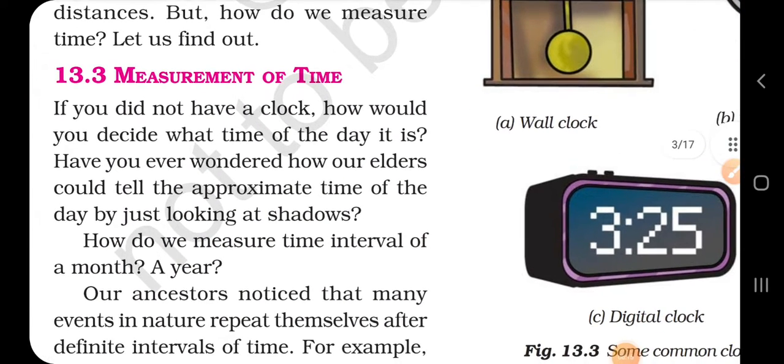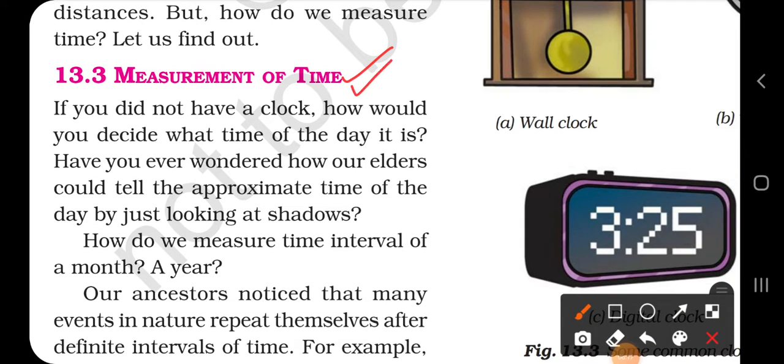Next comes measurement of time. How do you measure time? If you did not have a clock, how would you decide the time? In olden days people used to measure by paher - first paher, second paher, third paher, fourth paher.